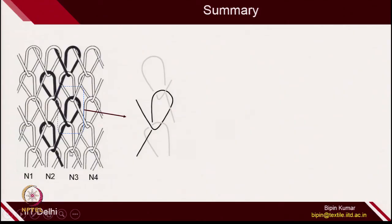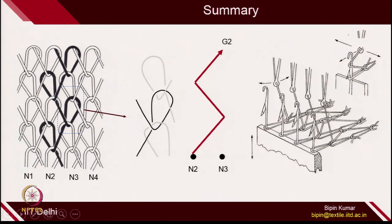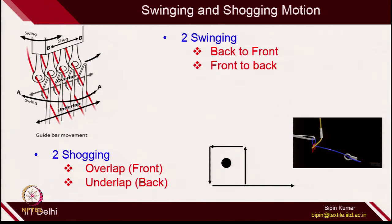Before I move on, just a quick recap of what we covered in lecture number 3, because this lecture is going to be a little bit complicated. I recommend you listen to lecture number 1 carefully, because all those principles we are going to use right now. We already discussed about warp knitted structure and how the yarn moves from one needle to other needles. The guide is responsible for this. In the last class, we discussed about the movement of these guides — it does not only change location from one needle to other needle. For doing this, it performs certain motions in a sequence, which is swinging and shogging.